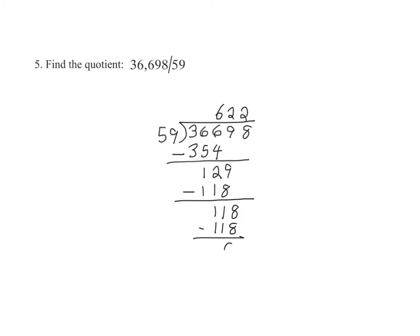Subtracting leaves us with a remainder of 0. Therefore, 36,698 divided by 59 is equal to 622.